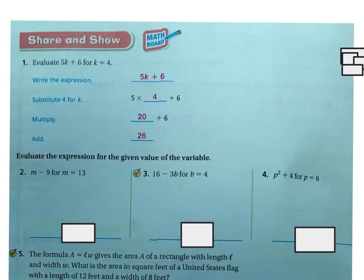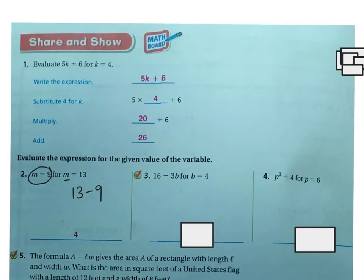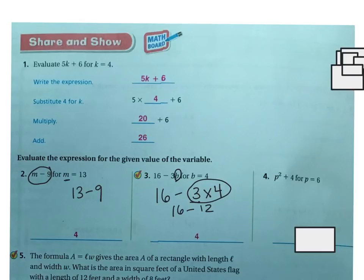Let's do a couple more. If we have M minus 9, and M is 13, that means 13 minus 9, which is 4. Same here on number 3: we have 16 minus 3B, and B is 4. So that means 16 minus 3 times 4. I do my multiplication first, which is 12. So now I have 16 minus 12, and 16 minus 12 is 4.